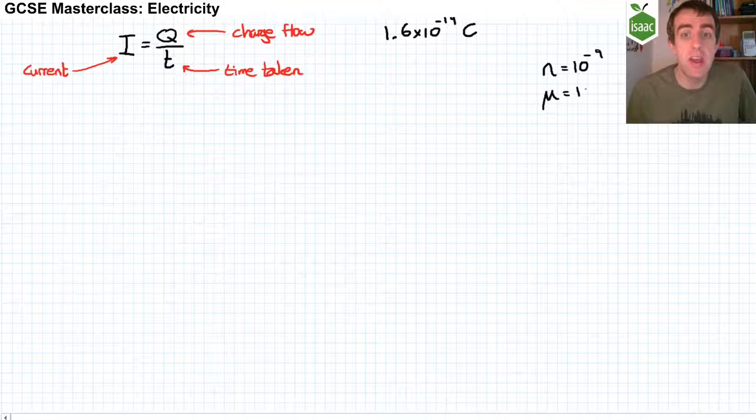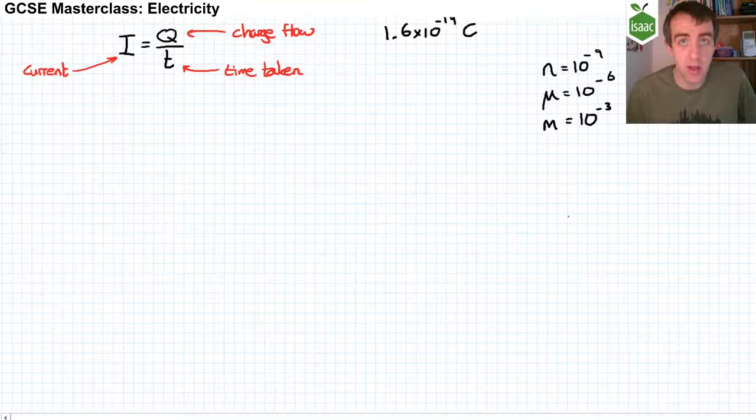Micro means 10 to the negative 6, and milli means 10 to the negative 3. We're not going to be dealing with larger numbers — the kilo, mega, giga — we're going to be dealing with these smaller numbers. Of course, pico, which I left off, is 10 to the negative 12.